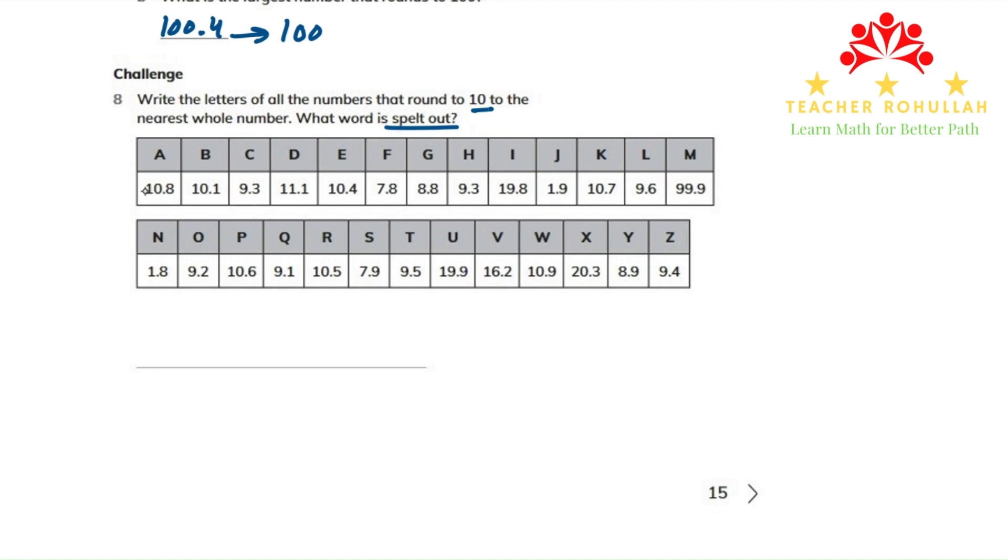10.8 rounds to 11, so this one cannot be one of those numbers. 10.1 rounds to 10, so I will write the letter B, which belongs to 10.1. The next number is 9.3, which also does not round to 10 and rounds down to 9. I will cross this one also. 11.1 also rounds to 11. 10.4 also rounds to 10, so I will write the letter E also.